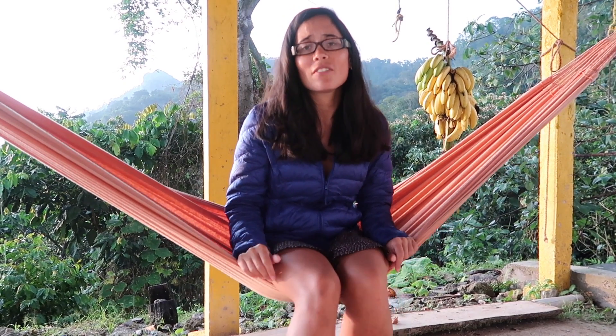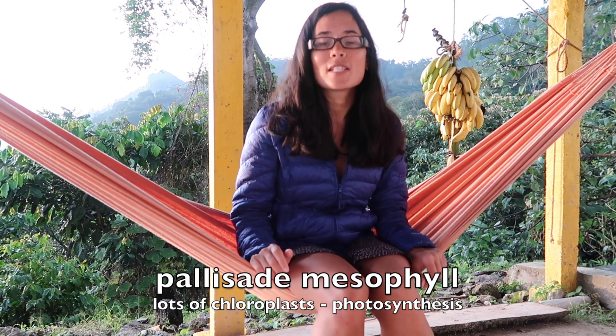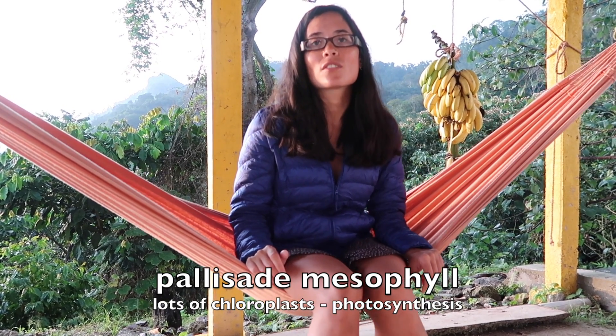Underneath that you have the palisade layer or the palisade mesophyll. Now this is what you, when you're drawing your plant cells, this is actually the palisade mesophyll layer. So you're going to be drawing lots of chloroplasts, a vacuole, nucleus, cell wall and cell membrane. And if they ask you what the role of the palisade mesophyll is, it's to contain lots of chloroplasts to carry out lots of photosynthesis.